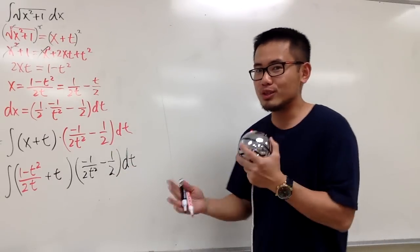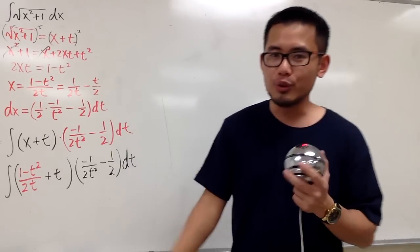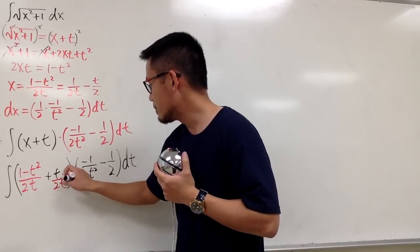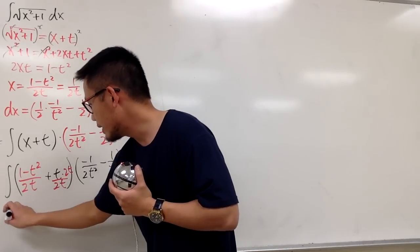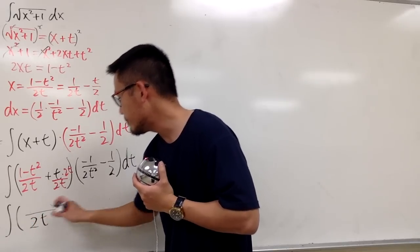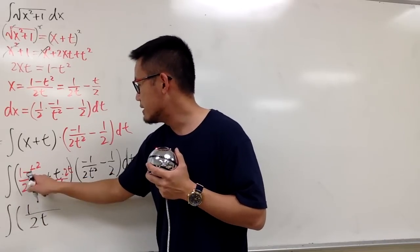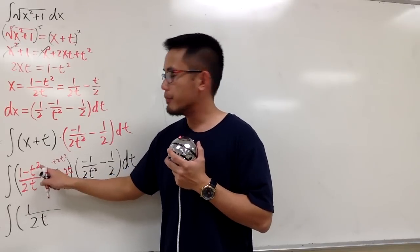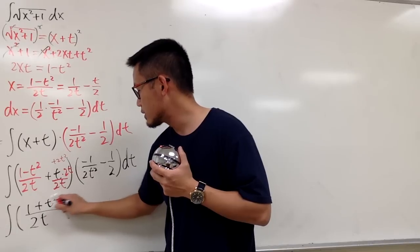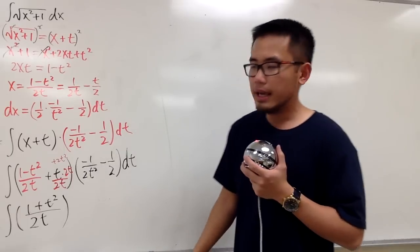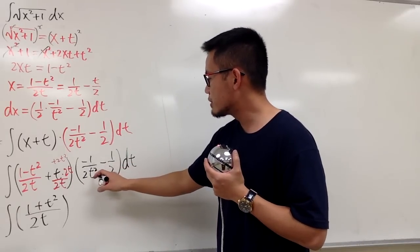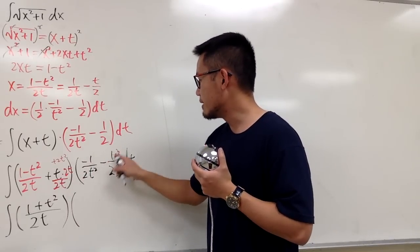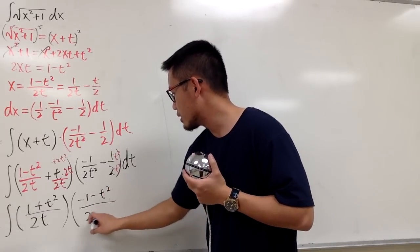After converting to the t world, this is just power functions and polynomials, so we can integrate by doing some algebra first. Combining the fractions inside: multiplying by 2t top and bottom, we get 1 minus t squared plus t times 2t, which gives 1 minus t squared plus 2t squared, so 1 plus t squared over 2t. For the other factor, multiplying by t squared top and bottom gives (negative 1 minus t squared) over 2t squared.